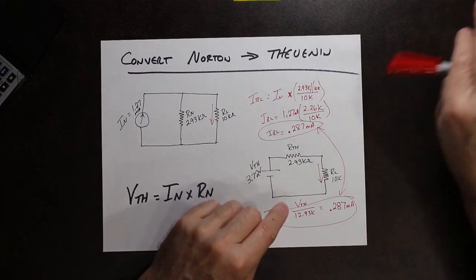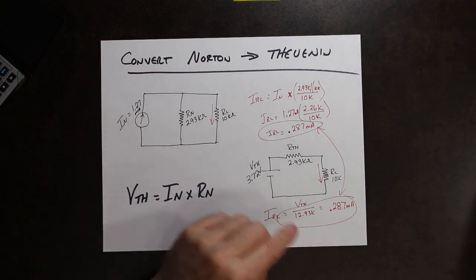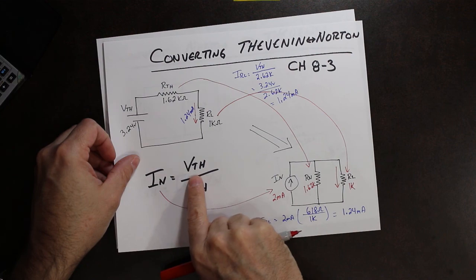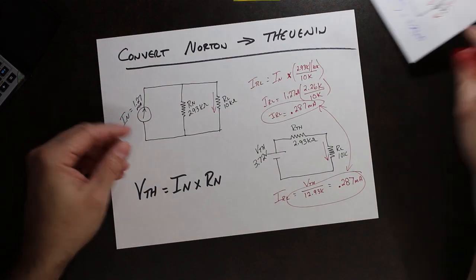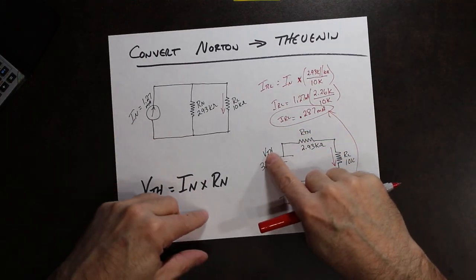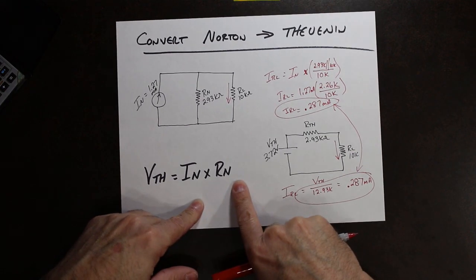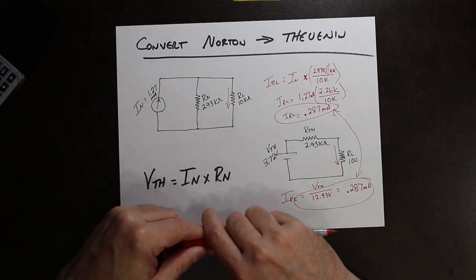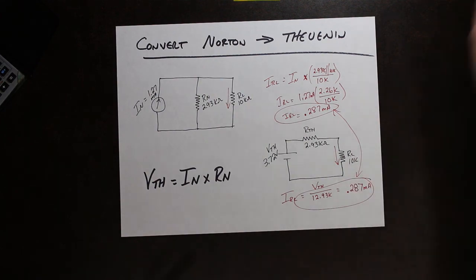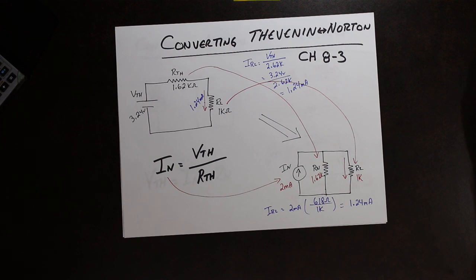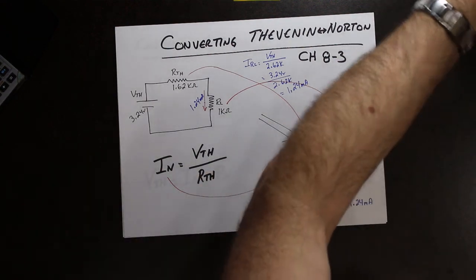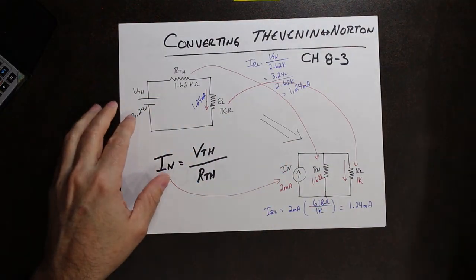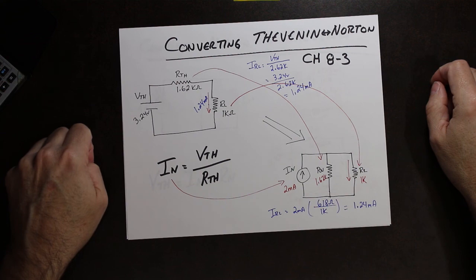To convert Thevenin's to Norton's, you calculate Norton's current using Ohm's Law: voltage over resistance. When converting Norton's to Thevenin's, you're calculating a voltage — also Ohm's Law. It's very easy to convert between the two. You can find this in chapter 8-3 of our textbook, Principles of Electric Circuits by Floyd and Bakla. I hope this helps — everybody take care, and we'll see you next time.